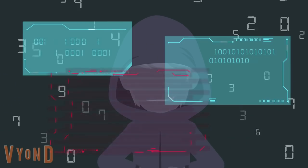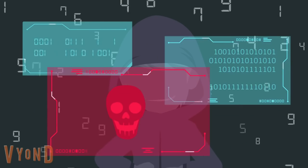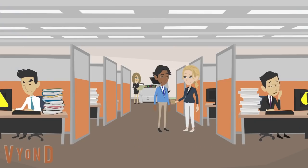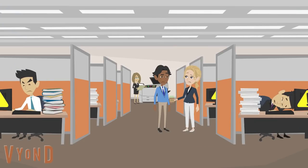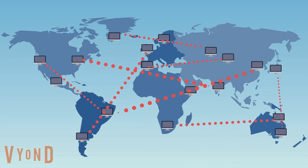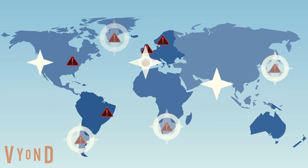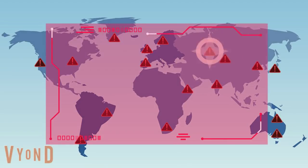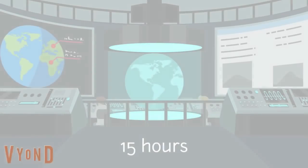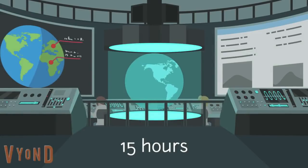But, due to a programming error, it spread so fast it couldn't be contained, and inadvertently began interfering with the normal operation of computers. The Morris virus infected almost all of the known internet at that time, which comprised of around 15,000 computers, and did so within 15 hours.